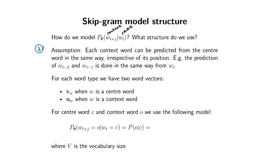For each word type we are going to define two types of word vectors: V when the word W is a center word, and U when W is a context word.